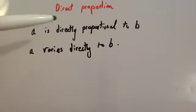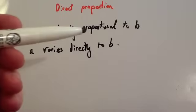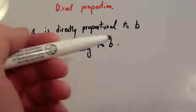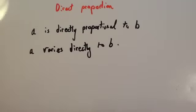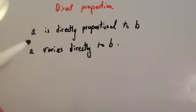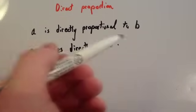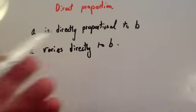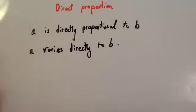In this video, we're going to be looking at direct proportion or direct variation. A is directly proportional to B. If something is directly proportional to something else, then as one increases, the other one increases. So if A is directly proportional to B, as A increases, so would B. Another way of writing that is A varies directly to B. These two sentences mean exactly the same thing.